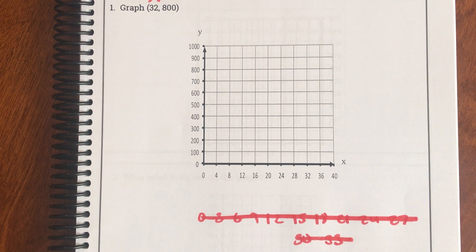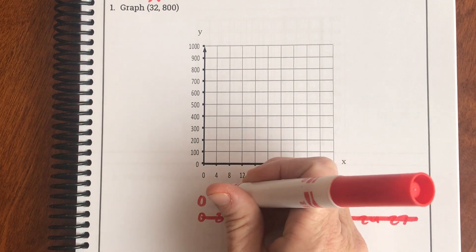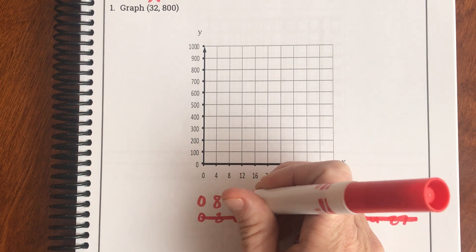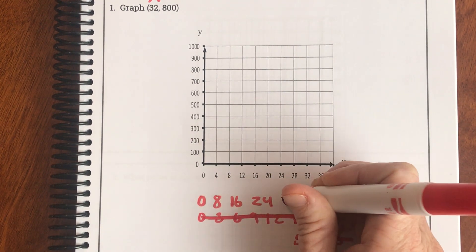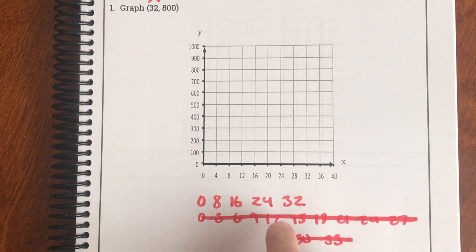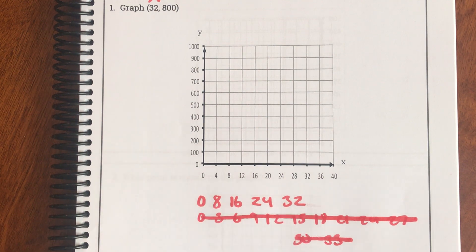They also could have chose twos, but that would have not fit on this coordinate plane. They would have had to have a much larger one. What else do you think they could have counted by? I'm thinking they also could have chose to count by eights and said 0, 8, 16, 24, 32, because that would have gotten them 32. So this would have been another option.